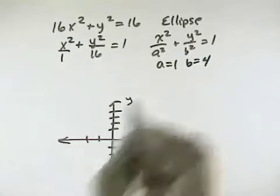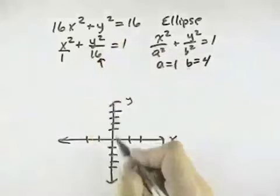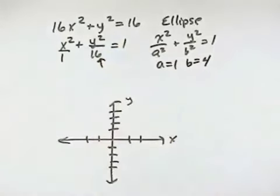Well, that means our major axis this time is under y. And so that means our ellipse will be long ways up and down, vertical, because y is the major axis.